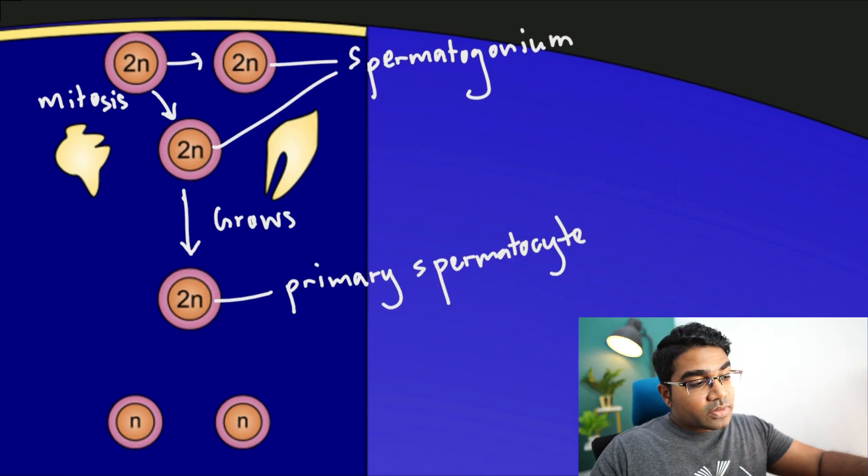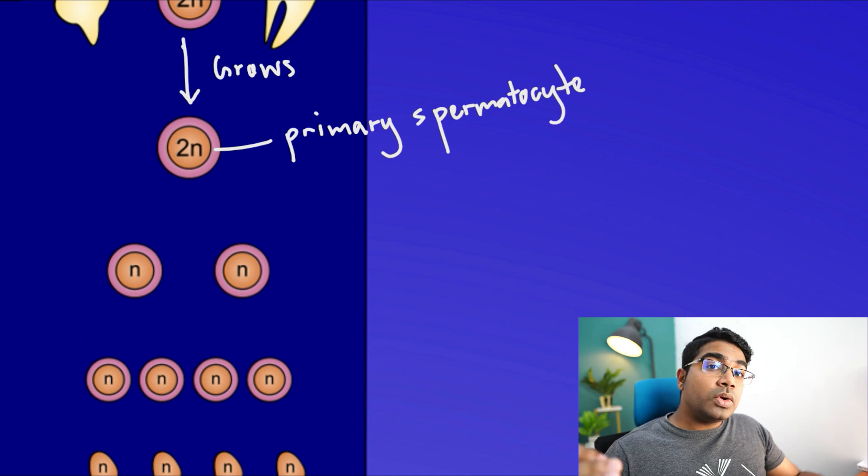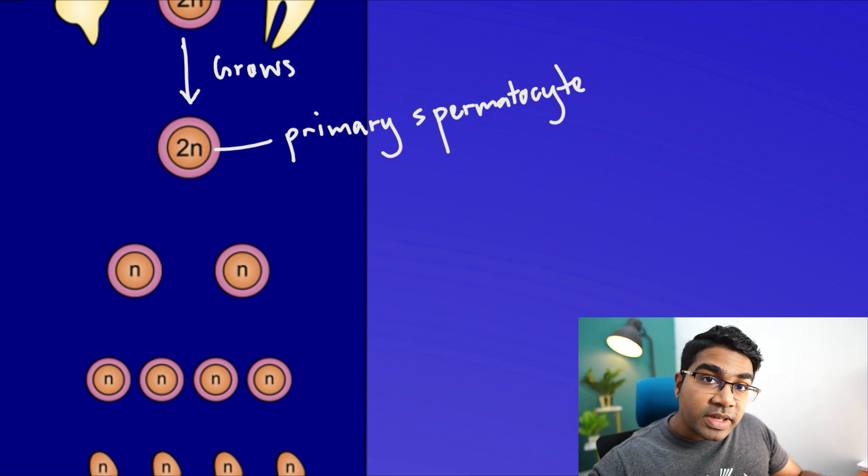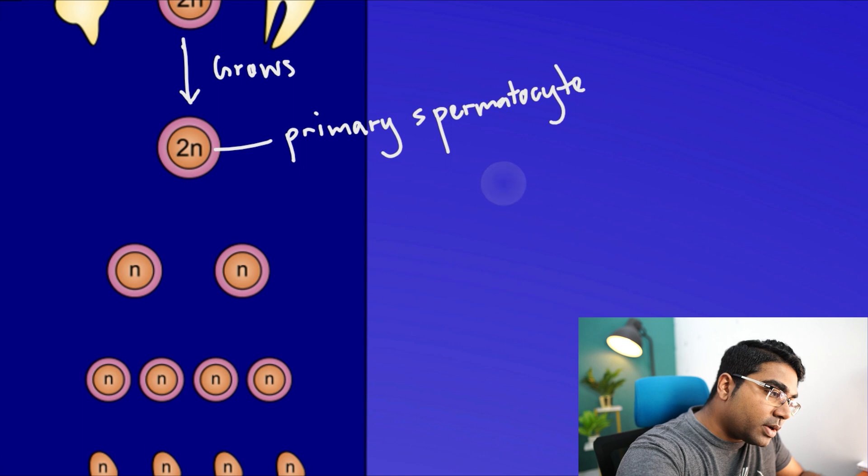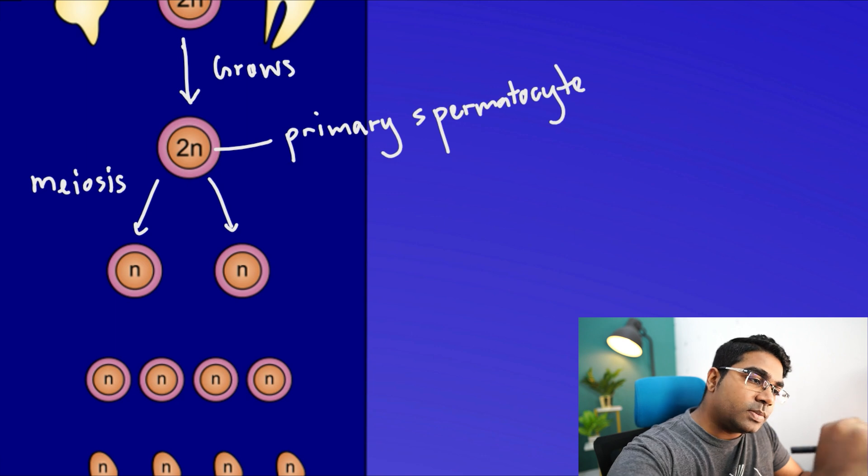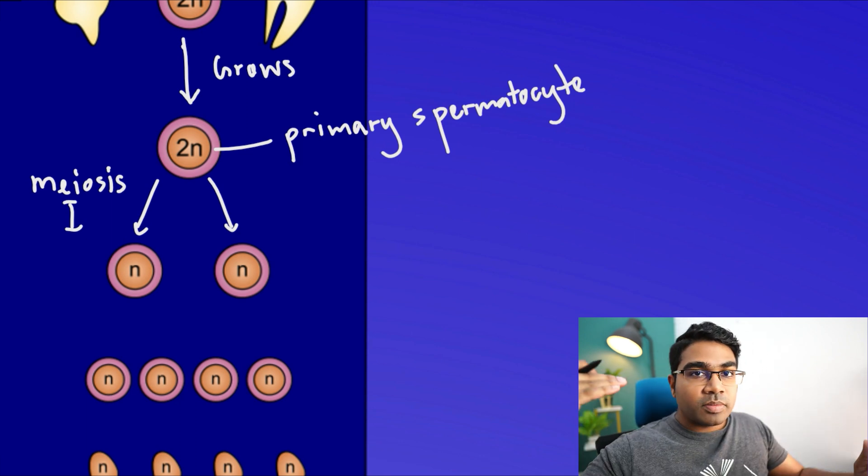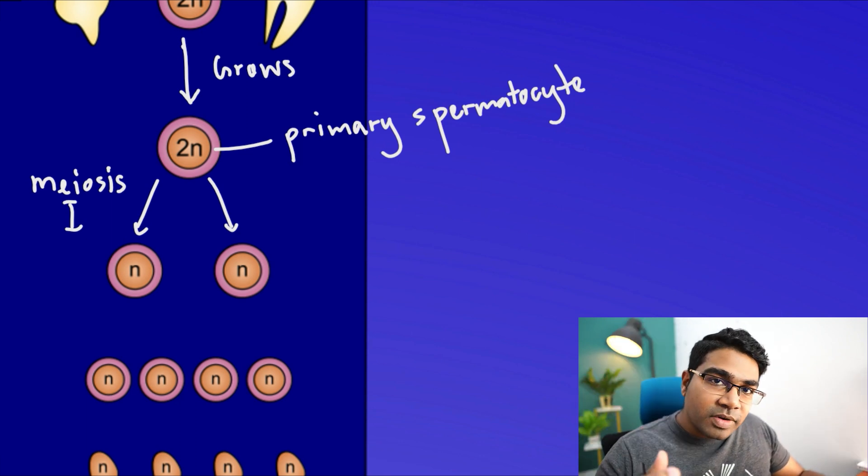The primary spermatocyte then undergoes the first meiotic division. Meiosis only occurs in the production of gametes. The first meiotic division, meiosis I, produces the first cells with haploid number of chromosomes, N. From 2N we have now become N, half the number of chromosomes.